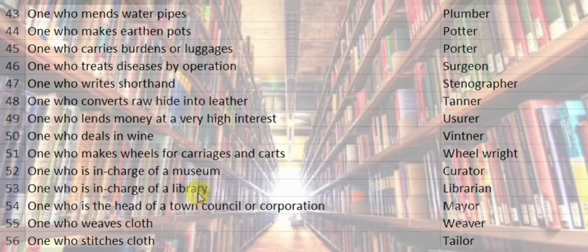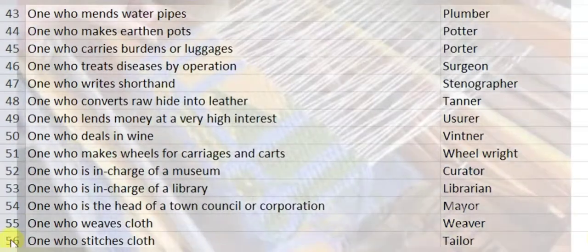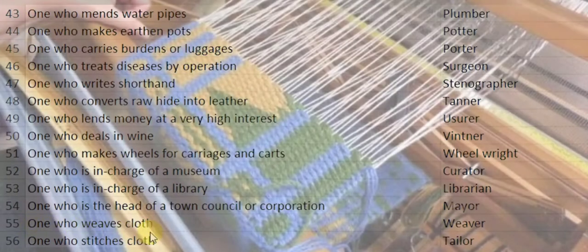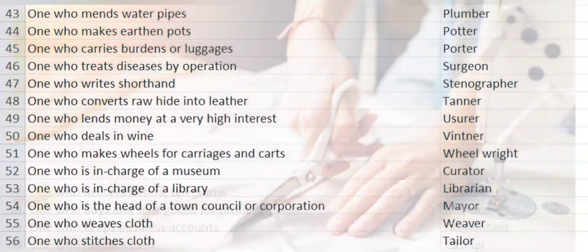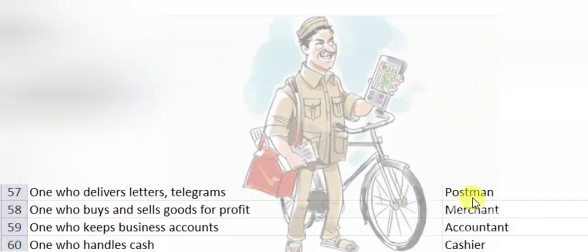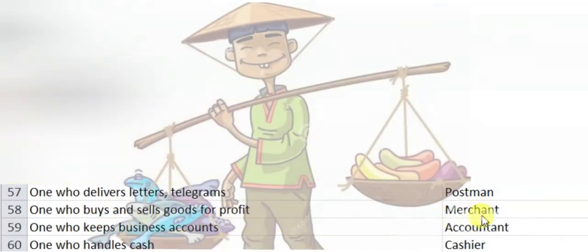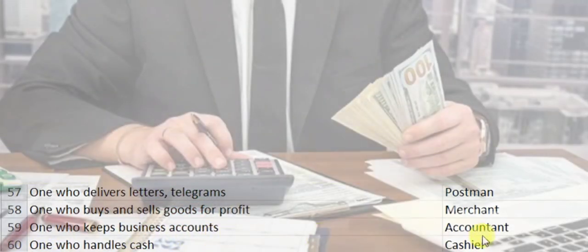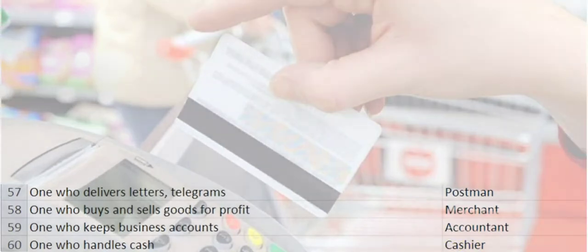One who is in charge of a library is a librarian. One who is the head of a town council or corporation is a mayor. One who weaves clothes is a weaver. One who stitches clothes is a tailor. One who delivers letters or telegrams is a postman. One who buys and sells goods for profit is a merchant. One who keeps business accounts is an accountant, and one who handles cash is a cashier.